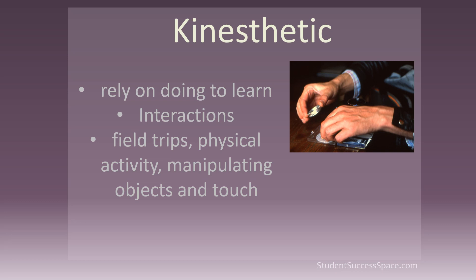Kinesthetic learners rely on doing to learn — movement, touch. They rely heavily on interactions between themselves and their environment. They need to have a reaction that is attached with their body, and will easily recall events or information attached to an experience or a feeling of a physical event. These learners learn best through field trips, physical activities, manipulating objects, and touch. Kinesthetic learners tend to have high difficulty sitting still — they're the ones whose legs bounce all the time — and they need frequent breaks when learning.